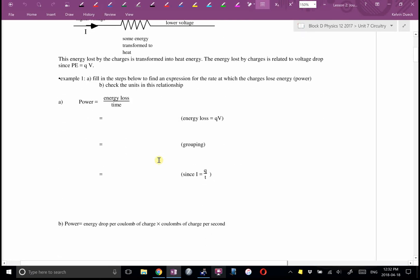So we can find an expression for the rate at which charges lose energy. Power loss. Power is energy loss over time. Energy loss is going to be QV over time. If you group those two together, what's Q over T? Current. And you get power equals IV. Although we almost always write it as VI.